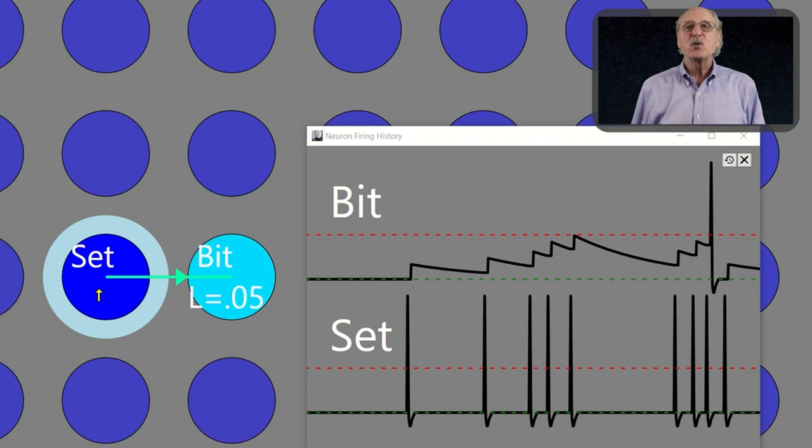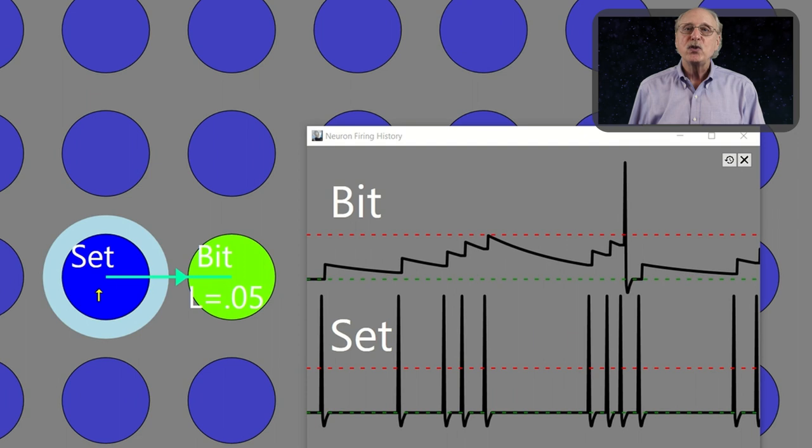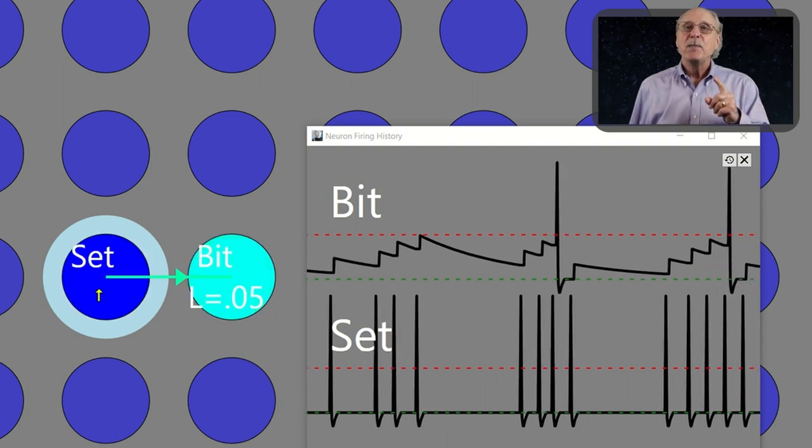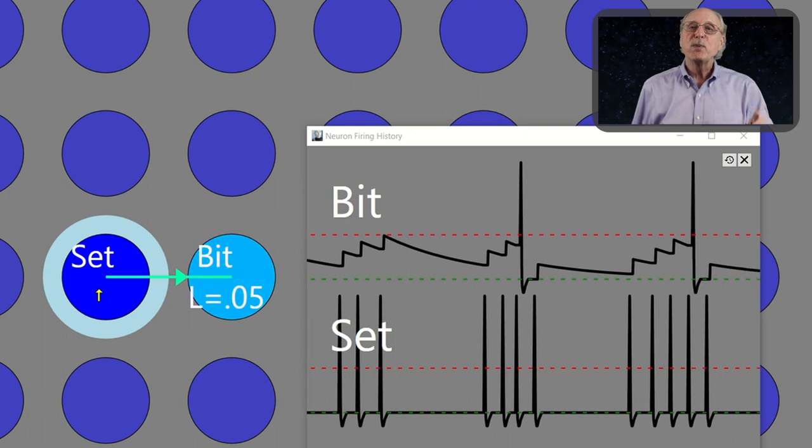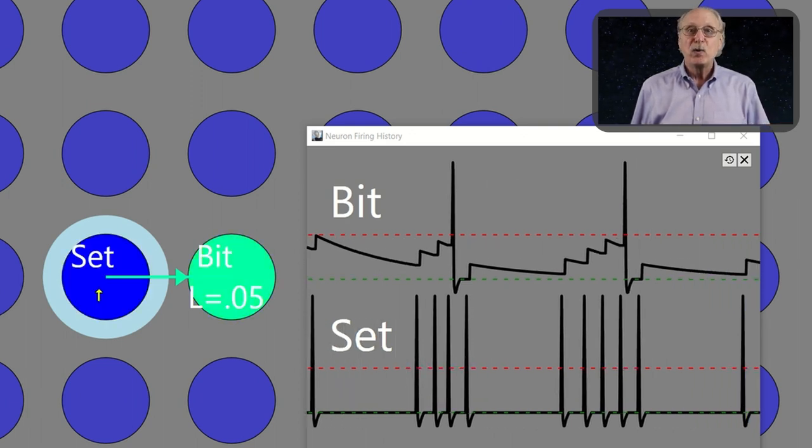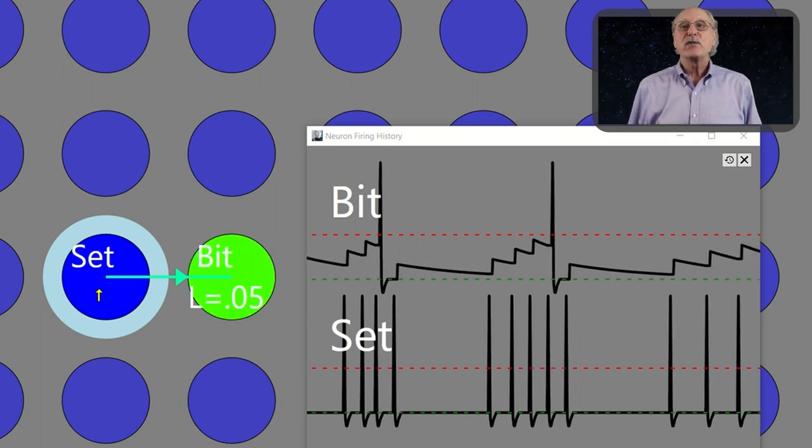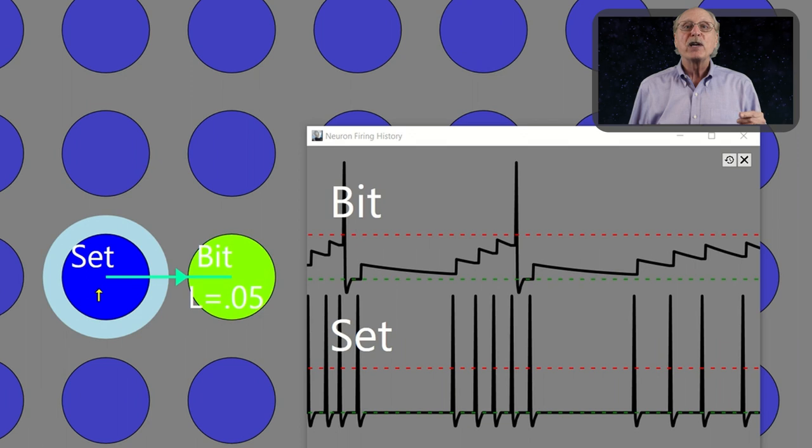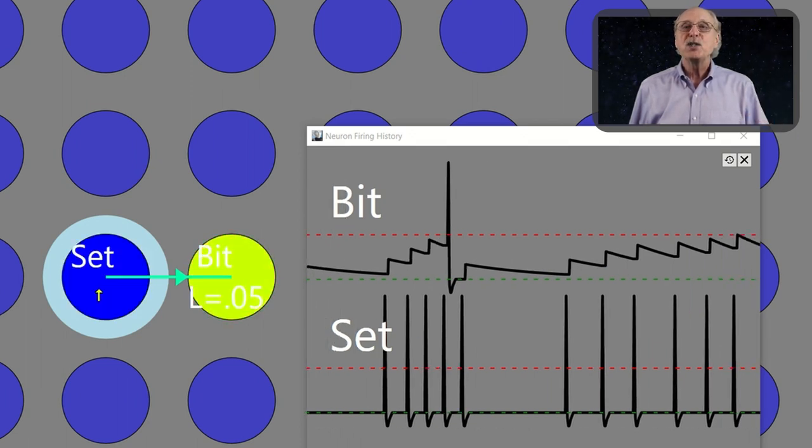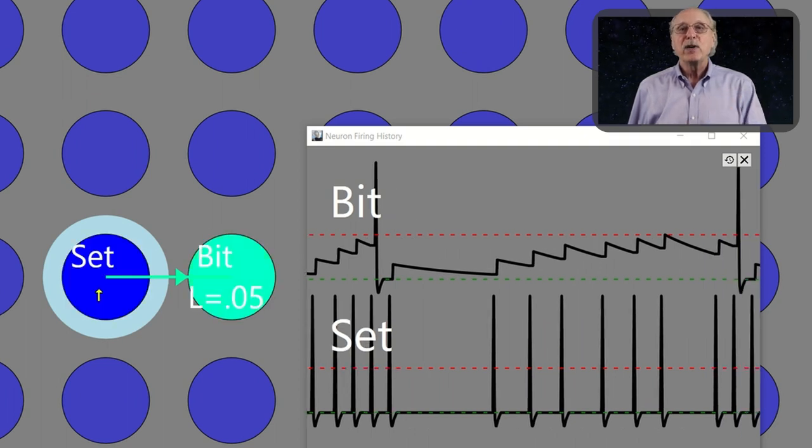If you have a source connected to a target with a weight of 0.9, it will take two incoming spikes to make the target fire, but only if the second spike arrives before the charge has leaked below 0.1. In this way, any neuron acts as a frequency sensor, firing when the source is spiking at or above a specific frequency. This is governed by the leak rate and the synapse weight.